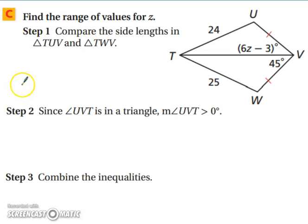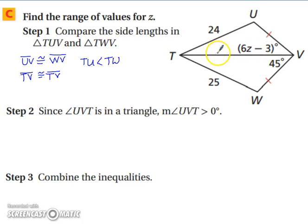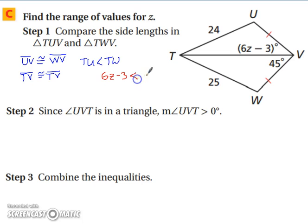Let's look at finding the range of values for Z. We have UV congruent to WV and TV congruent to TV. When we look, TU is smaller than TW, which means angle UVT is going to be smaller than angle WVT. So 6Z minus 3 has to be less than 45, and when we solve for Z we end up with Z less than 8.